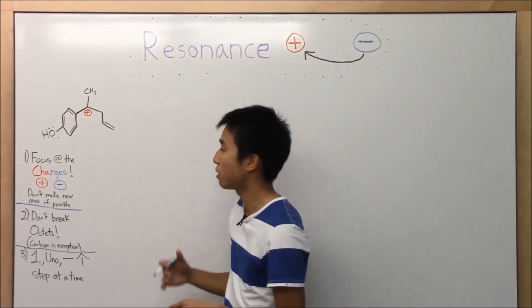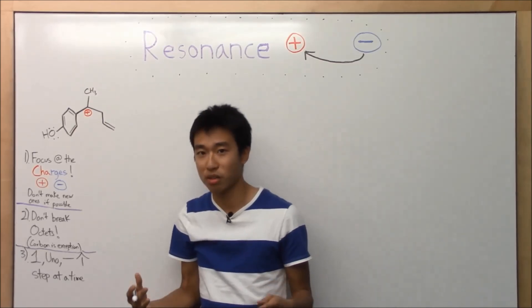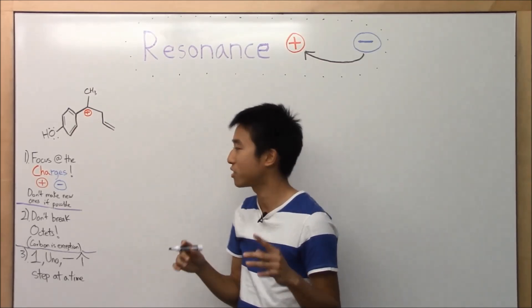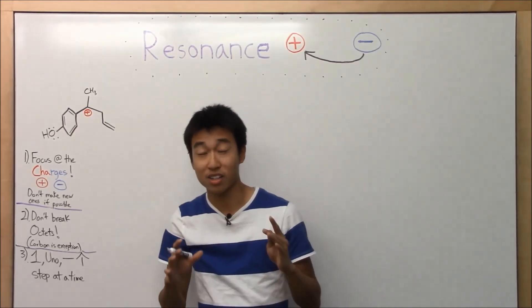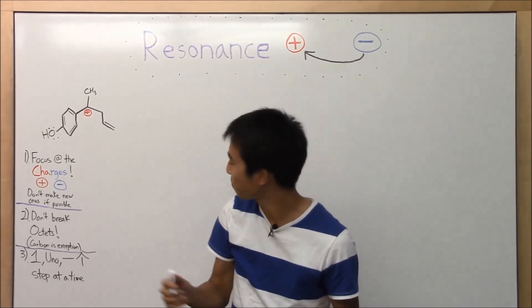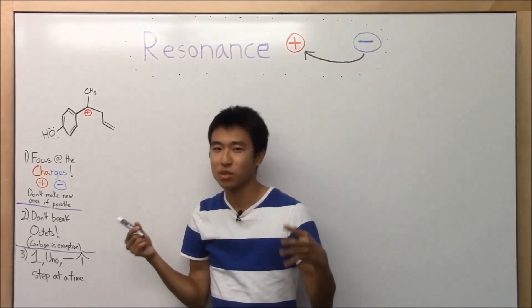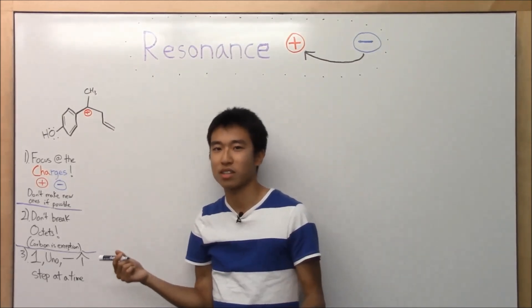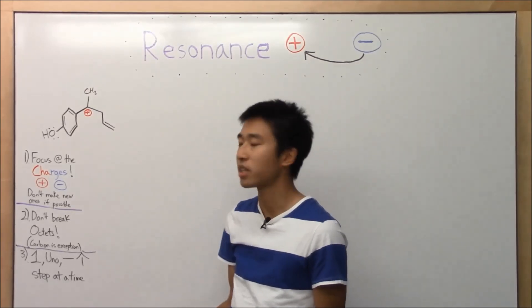Your atoms like their octets, so don't break them. Oxygen, nitrogen — don't break their octets unless you absolutely have to. The only exception is carbon; it's okay if you break his octet because he's kind of chill and nice.